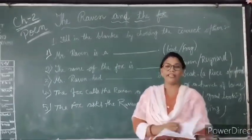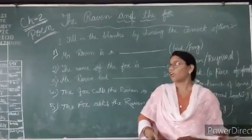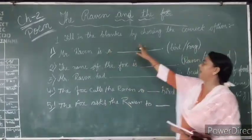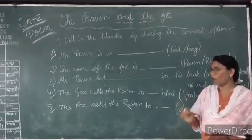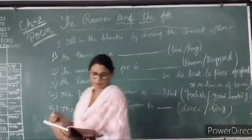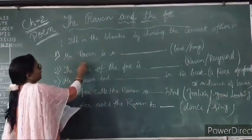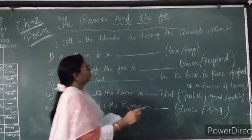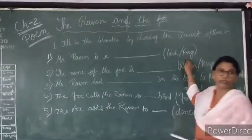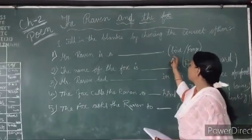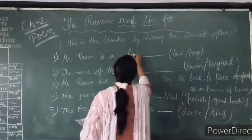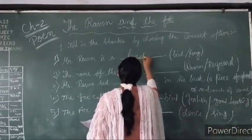Okay, so students, today we are going to discuss fill in the blanks by choosing the correct options. Now, your first question is: Mr. Raven is a bird or a bird? Bird. Mr. Raven is a bird. Okay, good.